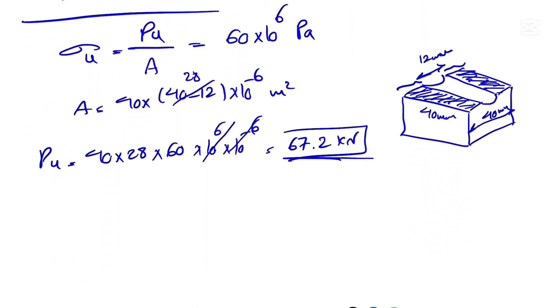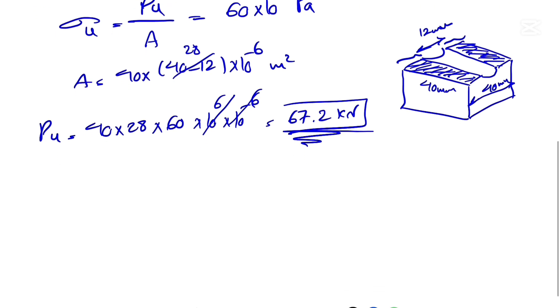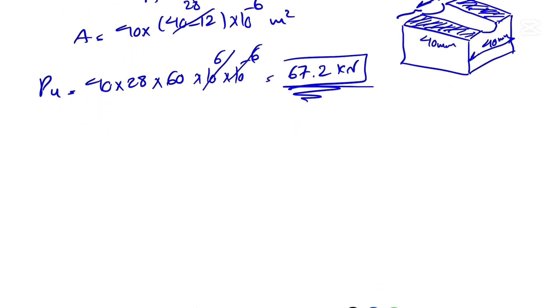That's going to be 67.2 kilonewtons. So far, the ultimate force in the previous part is our winner because it's the lowest. If we go with the one that we found in this stage, it's going to fail the pin in the previous step.